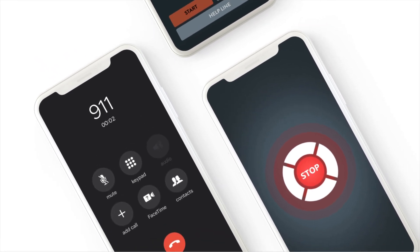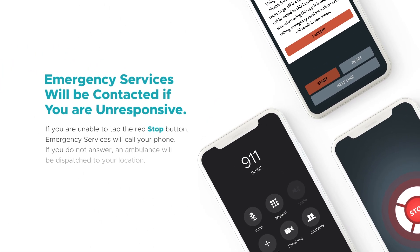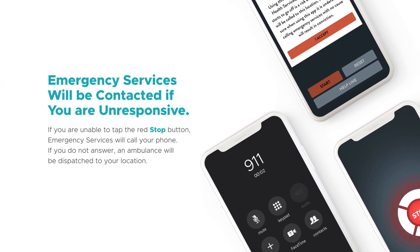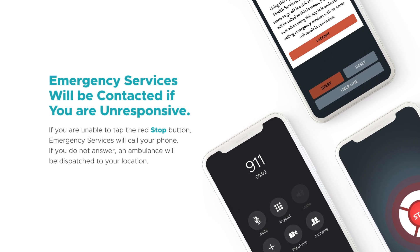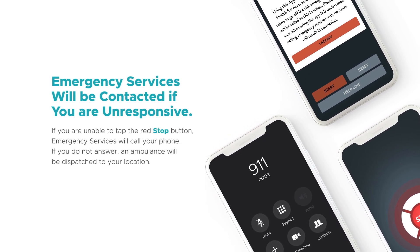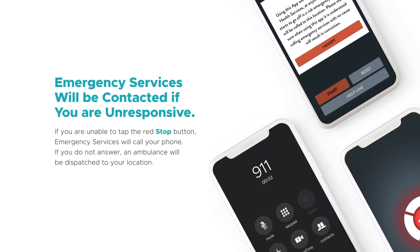In the event that you are unable to tap the red stop button, Lifeguard App will automatically contact emergency services by calling 911. Emergency services will call your mobile phone immediately to confirm that you are okay. If you do not answer, an ambulance will be dispatched to the location that you confirmed when launching the app. Lifeguard App's alarm will continue to sound as it will help paramedics determine your exact location.